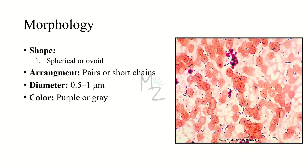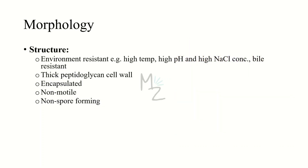Enterococcus is spherical or ovoid in shape. It occurs in pairs or short chains — a diplococcus occurring in short chains. Its diameter varies from 0.5 to 1 micrometer and it is purple or gray in color. Enterococcus is environment resistant — it can resist high temperatures, high pH, high salt concentrations, and bile. It has a thick peptidoglycan cell wall, which is why it is gram-positive, retaining the dye. Enterococcus is encapsulated, non-motile, and non-spore-forming.